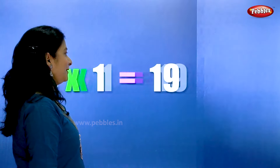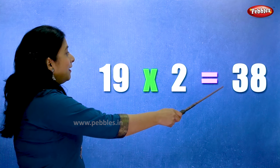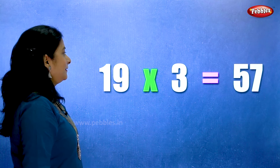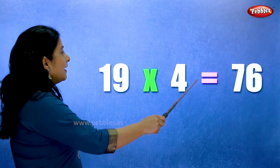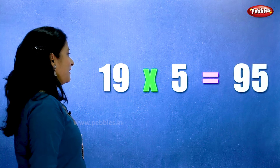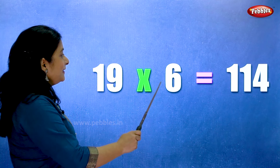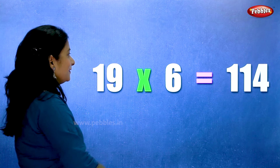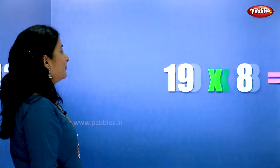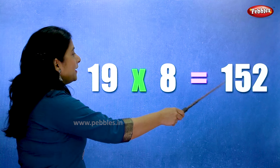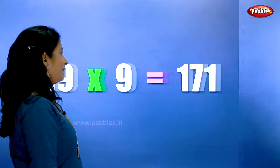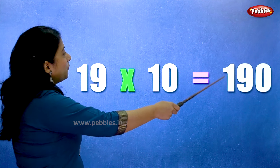Nineteen ones are nineteen. Nineteen twos are thirty-eight. Nineteen threes are fifty-seven. Nineteen fours are seventy-six. Nineteen fives are ninety-five. Nineteen sixes are hundred and fourteen. Nineteen sevens are one thirty-three. Nineteen eights are one fifty-two. Nineteen nines are one seventy-one. Nineteen tens are one ninety.